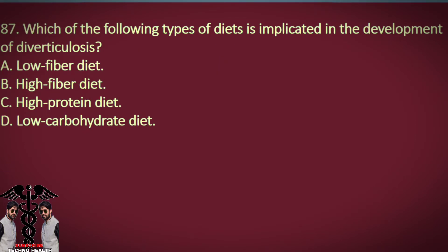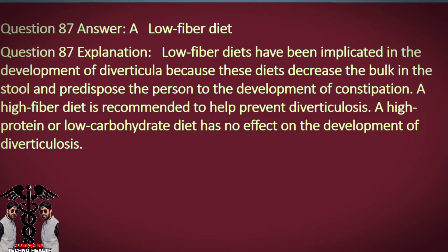Question 87. Which of the following types of diets is implicated in the development of diverticulosis? A. Low-fiber diet. B. High-fiber diet. C. High-protein diet. D. Low-carbohydrate diet. Answer: A. Low-fiber diet. Explanation: Low-fiber diets have been implicated in the development of diverticula because these diets decrease the bulk in the stool and predispose the person to the development of constipation. A high-fiber diet is recommended to help prevent diverticulosis. A high-protein or low-carbohydrate diet has no effect on the development of diverticulosis.